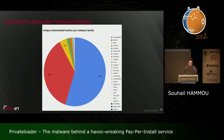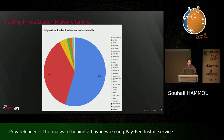From our malware classification system, the most common family dropped by Private Loader is SmokeLoader, taking the largest share, followed by Redline, Vidar, Raccoon, GCleaner, and others — exactly what we'd expect from a Pay-Per-Install service: predominantly commodity malware.